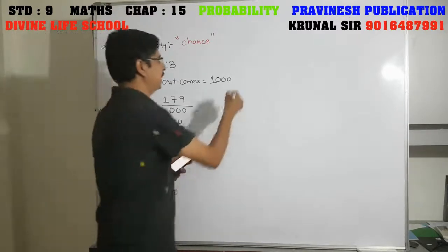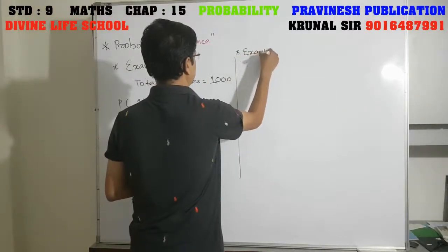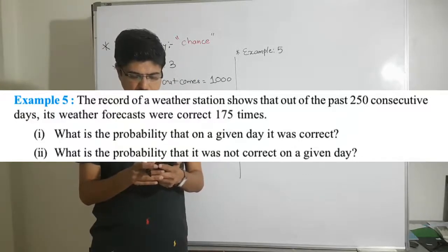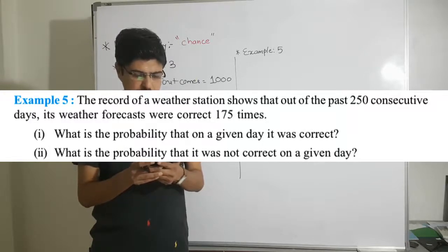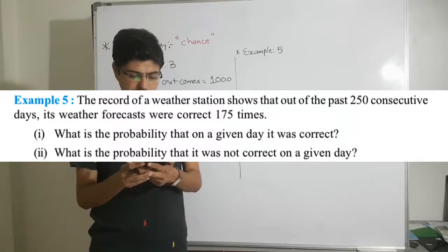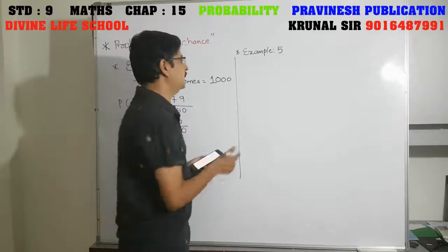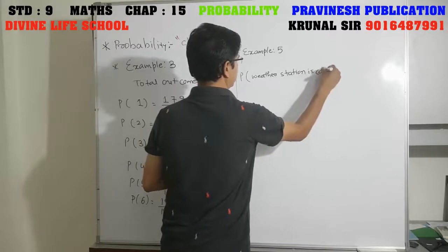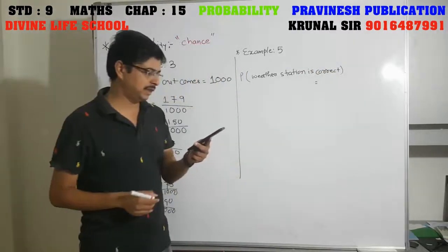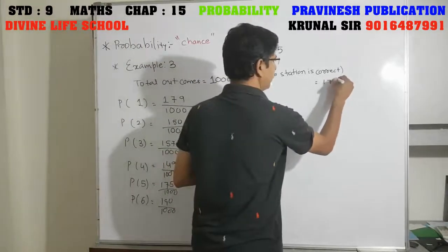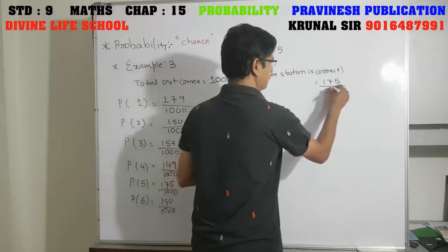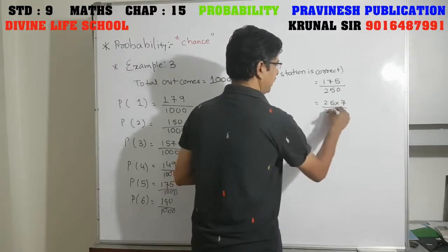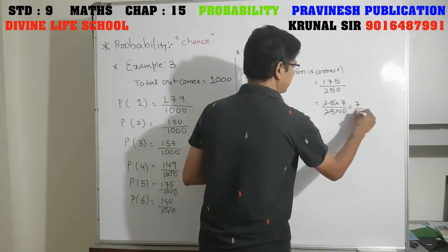Now example number 5. The record of a weather station shows that out of the past 250 consecutive days, its weather forecasts were correct 175 times. First question: what is the probability that on a day it was correct? Probability that the weather station is correct: it was correct 175 times out of 250 days. Simplifying: 25 sevens are 175 and 25 tens are 250, so 25 cancels — answer is 7 upon 10.